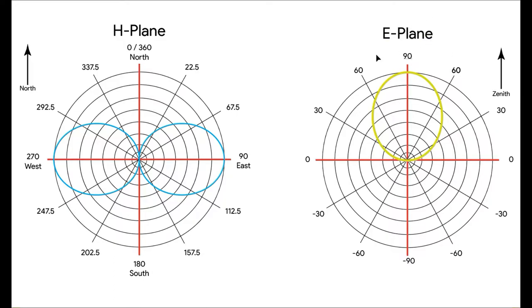And what is E-Plane? E-Plane is actually an elevation plane which coincides with the vertical or elevation plane. So, the value in the H-Plane, we call it the azimuth angle. But in E-Plane, it is called the zenith angle.